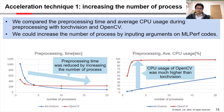Please look at the left figure. It indicates the preprocessing time, where the x-axis represents the number of processes. As you can see, preprocessing time was reduced by increasing the number of processes.